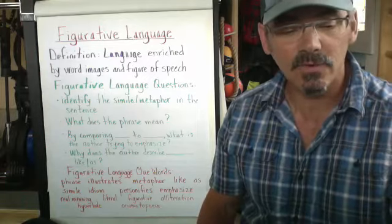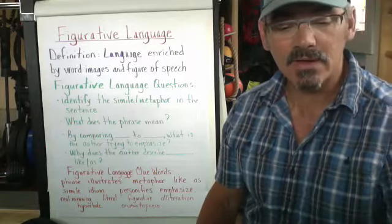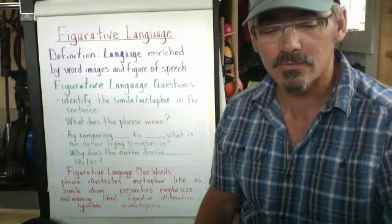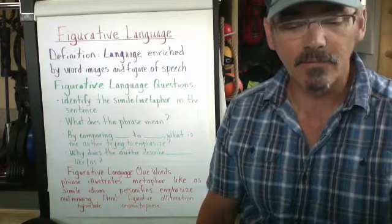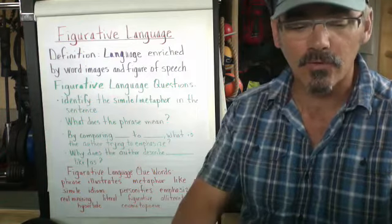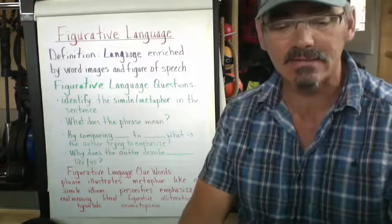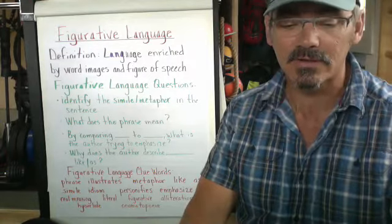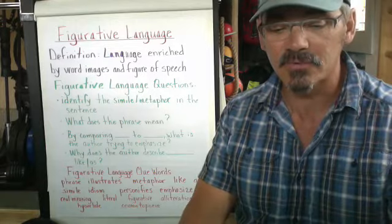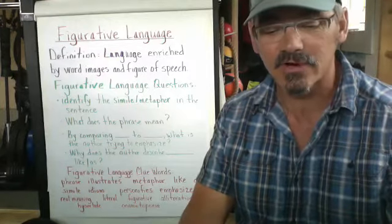The next one is metaphor. And that's a comparison between objects without using words like or as. Don't use them. Metaphors replace one word for another unrelated word. His mouth let out a firetruck siren. In this case, cry has been replaced by firetruck siren.